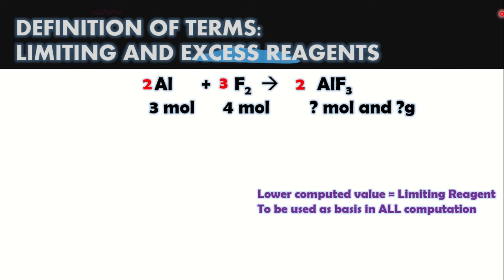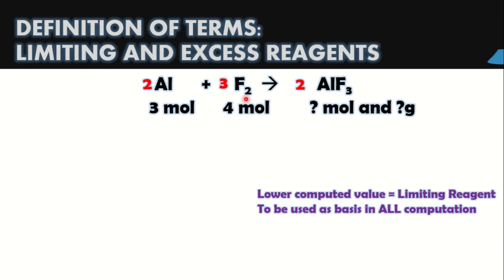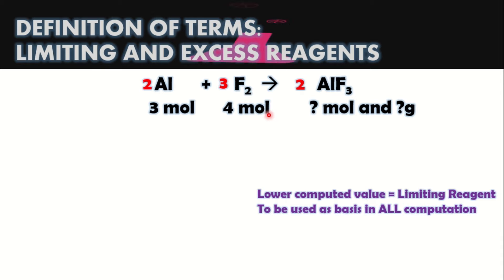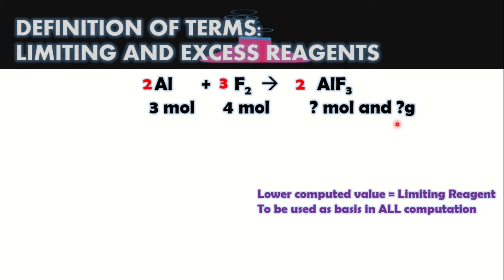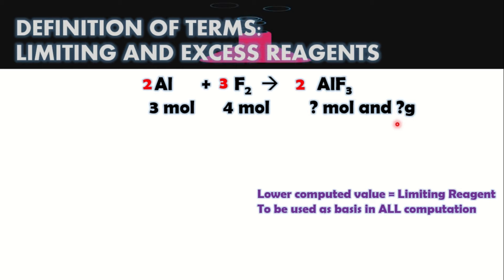Let us have this as an example. We have aluminum plus fluorine to produce aluminum fluoride. Remember that fluorine is a diatomic element, so therefore, lagi siyang merong two as a subscript. Ang given natin ay we have three moles of aluminum and we have four moles of fluorine. And how many moles of aluminum fluoride, and how much in grams of the aluminum fluoride will be produced after the reaction? The first step is for us to balance the chemical equation. If you need a review on this, go back to our module number 12, which talks about the different types of chemical reaction and how to balance chemical equations.